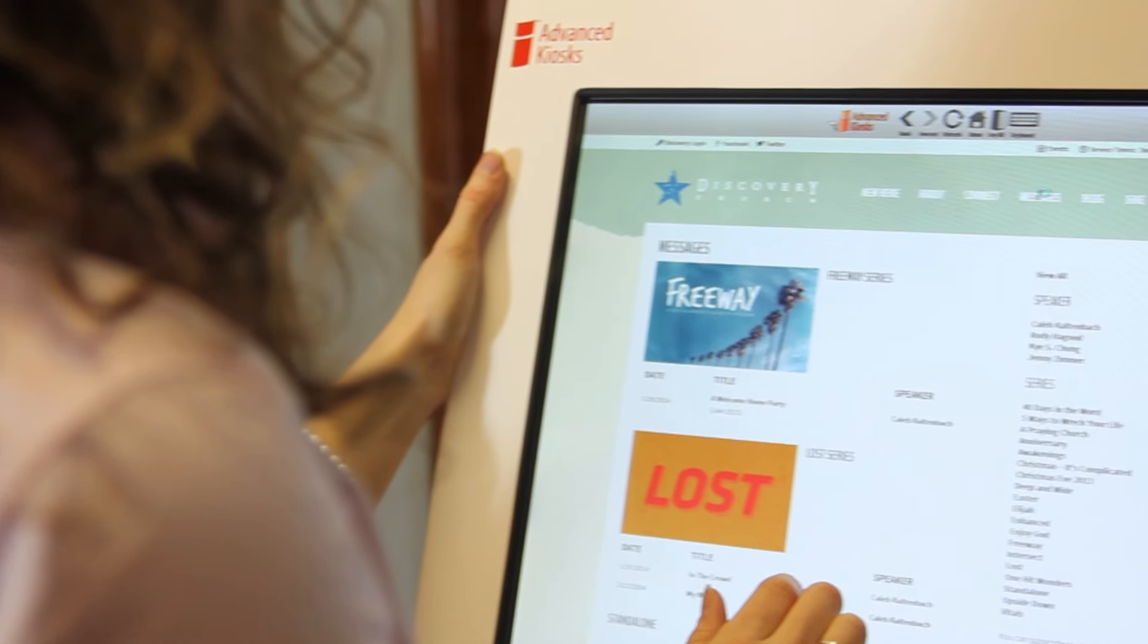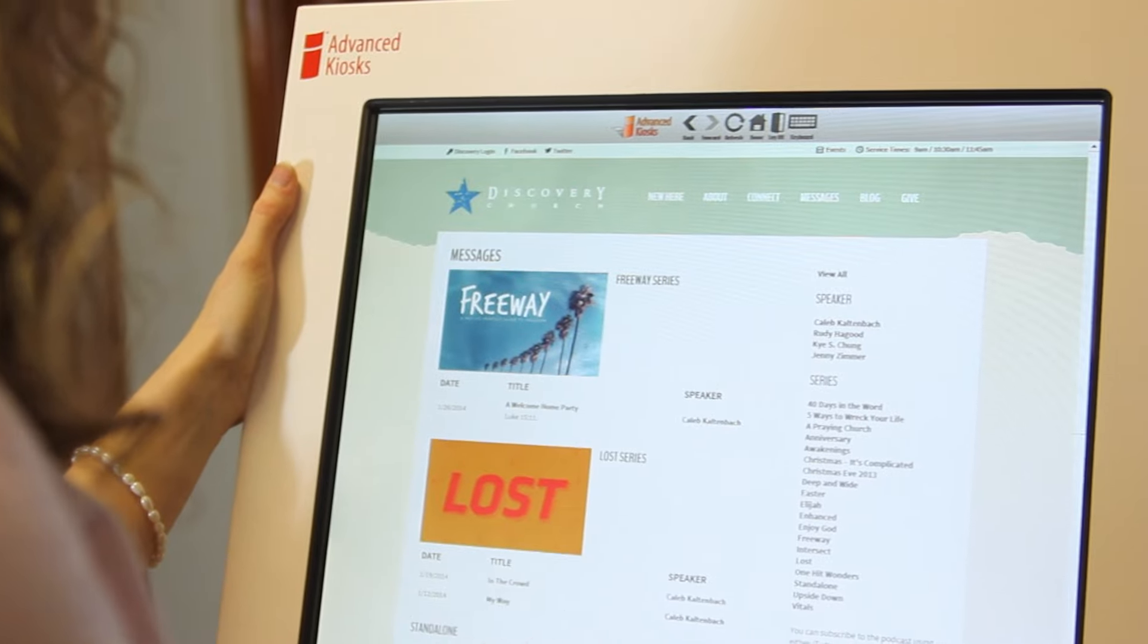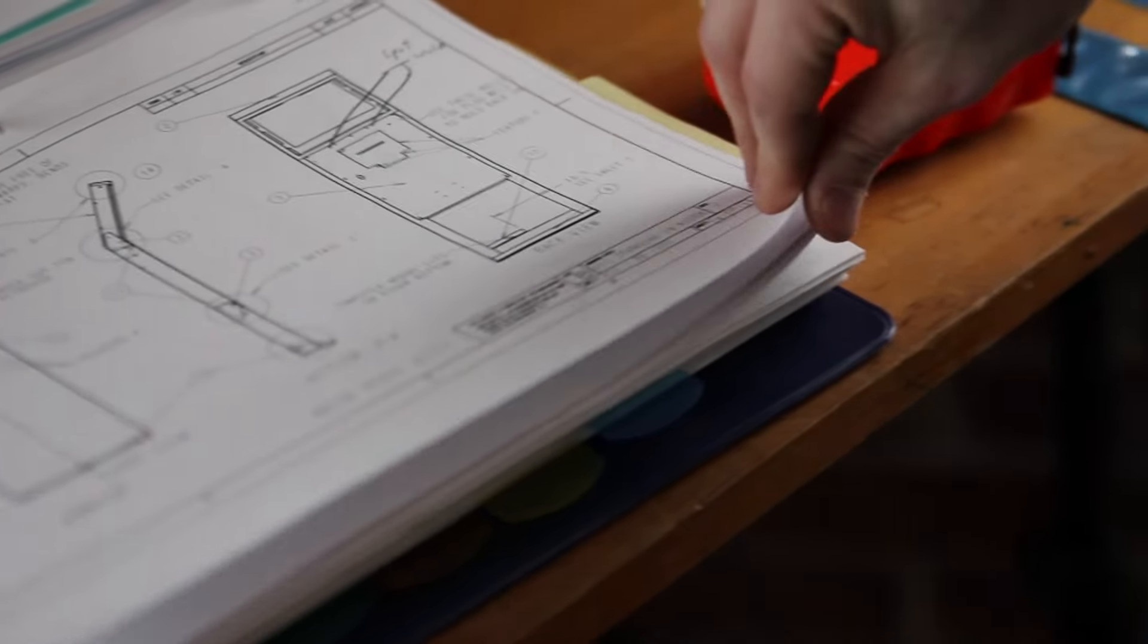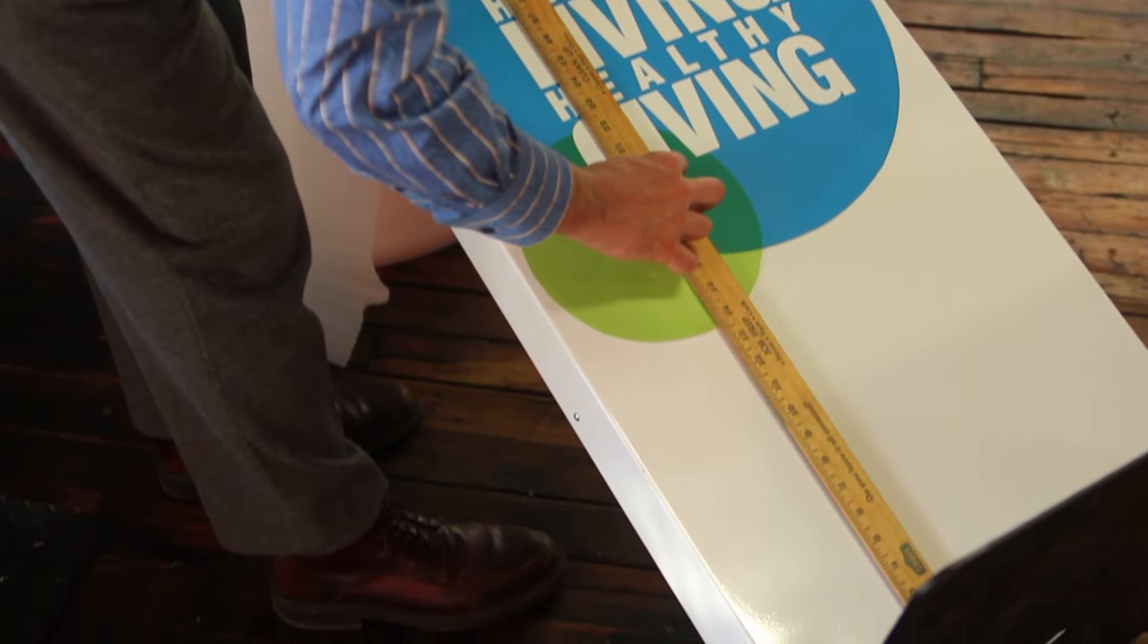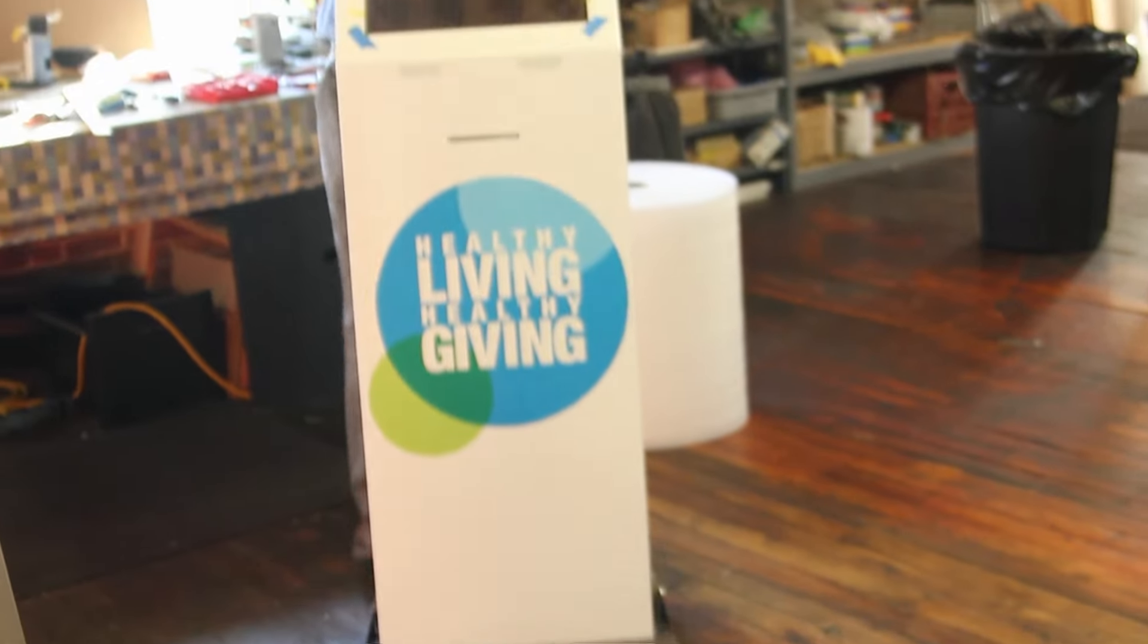A computer kiosk is a system by which a person goes up and interacts with and gets information, and that's where the whole idea of a computer kiosk came from. So you're now taking a computer system which was at someone's desk and you're customizing it, putting it out so it's really meant for interacting with people so it can provide solutions for what their needs are.